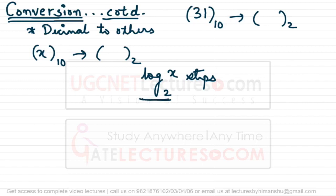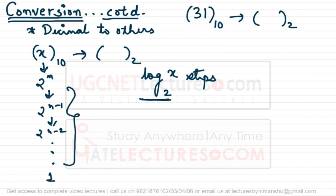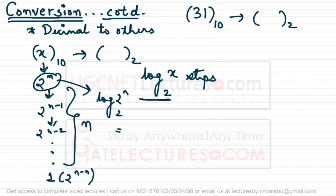To understand why it takes log x base 2 steps: suppose x is 2 power n. You divide repeatedly by 2 — first you get 2 power n minus 1, then 2 power n minus 2, and so on until you get 1. This takes n divisions. Since x equals 2 power n, taking log base 2 of x gives n. So the procedure takes n steps, which equals log x base 2.